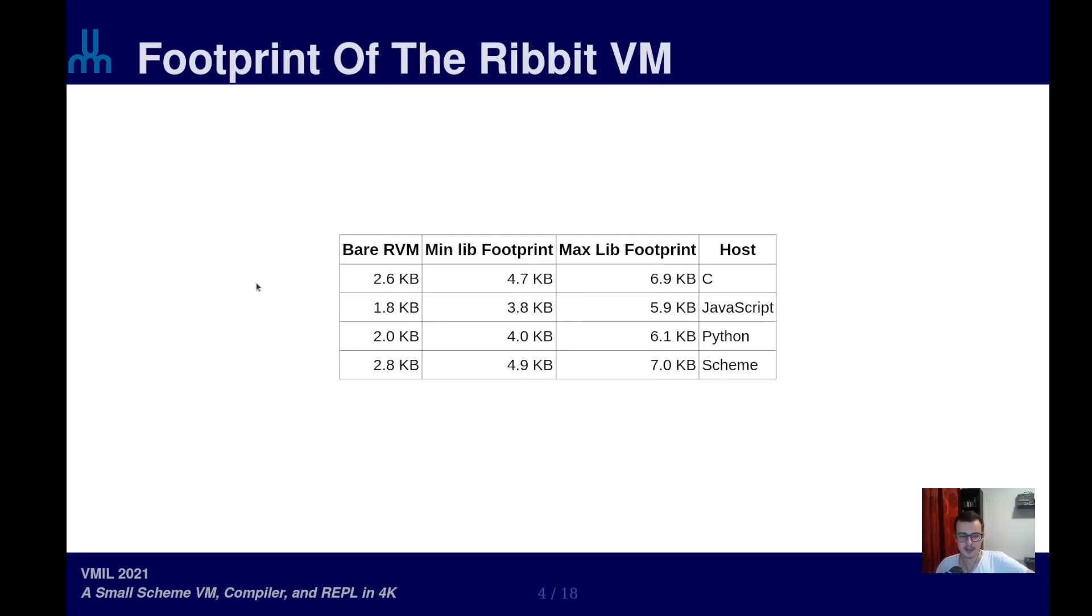In fact, the Ribbit virtual machine, only by itself, is around 2 kilobytes of executable code. And like I said, depending on the library you link the program with, you may find the size of the REPL with the virtual machine is between 4 and 8 kilobytes of executable code.